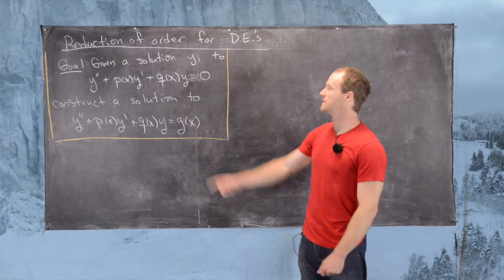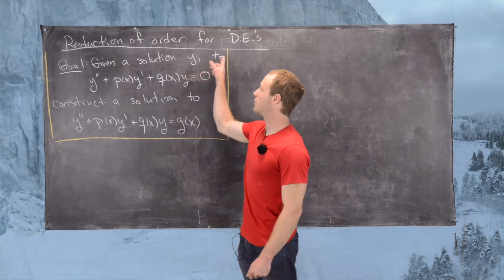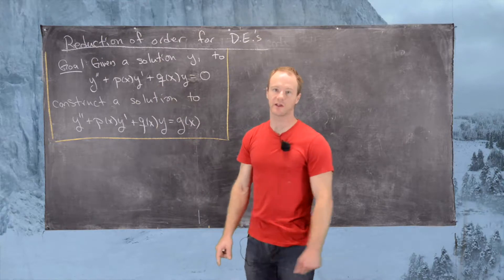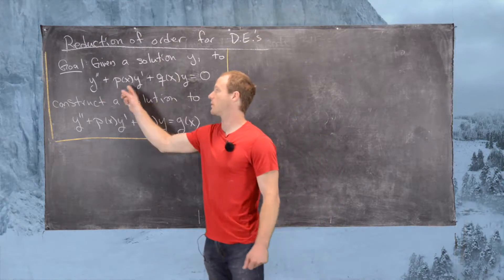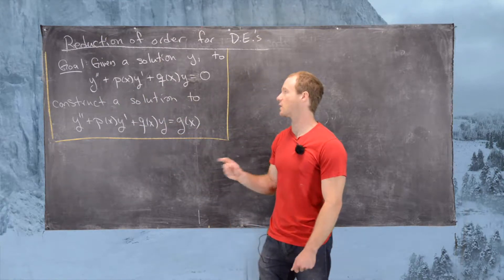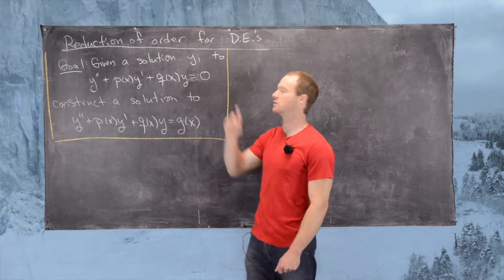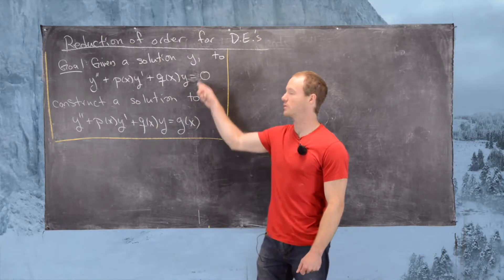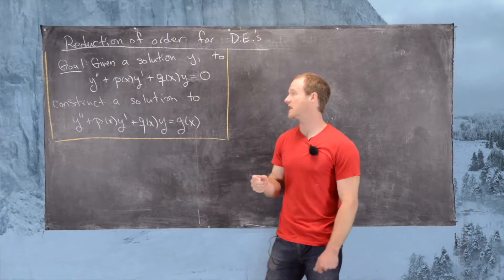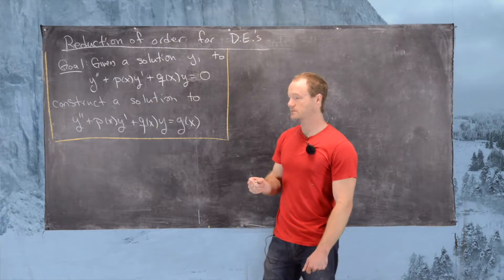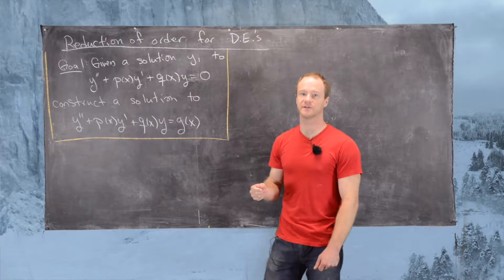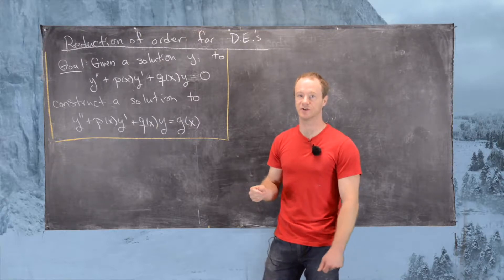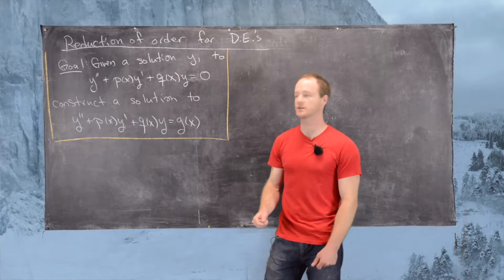Here's our goal. Say we're given a solution y1 to this second order linear differential equation: y'' + p(x)y' + q(x)y = 0. It's a homogeneous differential equation, so we have a homogeneous solution. This highlights the importance of finding solutions to corresponding homogeneous differential equations given a general differential equation.